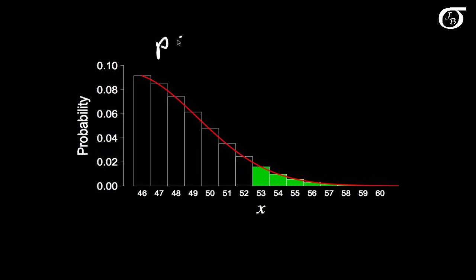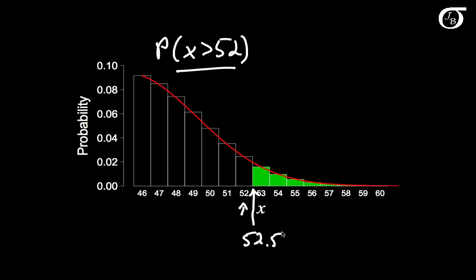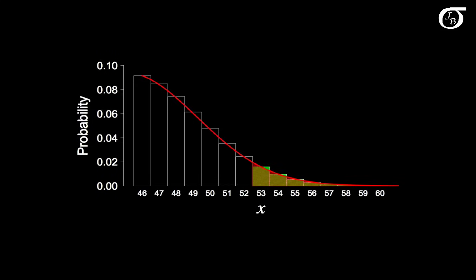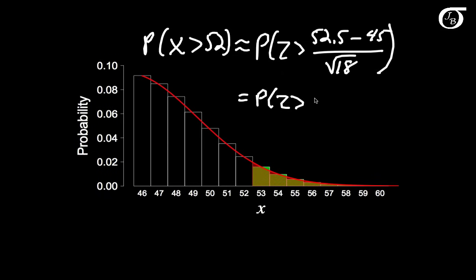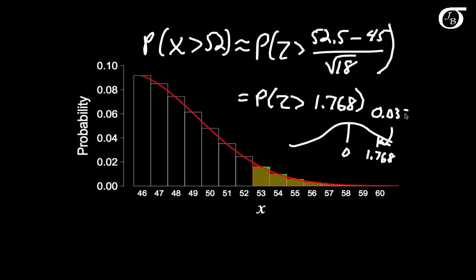For the probability that x is strictly greater than 52, I want to make sure I don't include any of 52, so I should start at 52.5. Applying the continuity correction: P(z > (52.5 − 45) / √18) = P(z > 1.768). From the standard normal table this works out to approximately 0.0385.